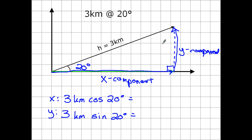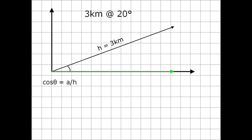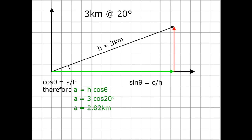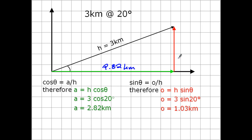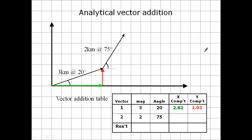So the x component is the hypotenuse times cosine of theta. Put that in your calculator — make sure it's in degrees, not radians — and you get 2.82 kilometers. For the y component using sine, you get 1.03 kilometers. So the first vector has an x component of 2.82 km and a y component of 1.03 km. Don't forget your units — I take off points on tests and quizzes for no units.